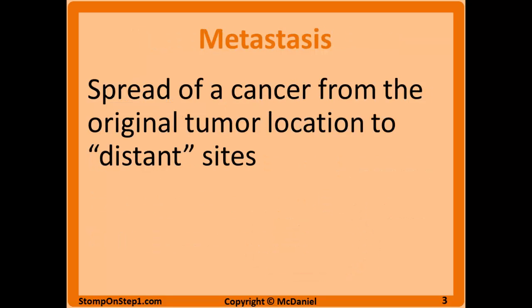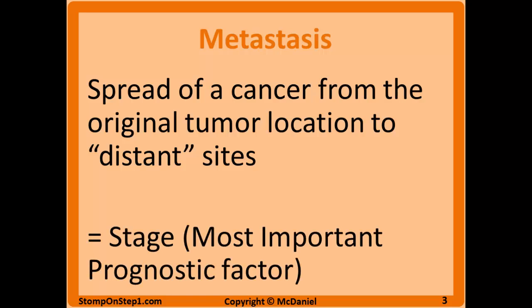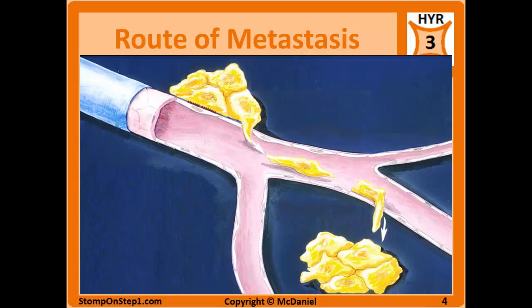Now let's talk about metastasis. This is generally thought of as being separate from cancer invasion, which is the direct extension of a cancer across an organ or to neighboring organs. Invasion is a tumor growing in size and taking up more space, while metastasis involves migration to a completely new site in the body. This is the most important factor for determining a cancer's stage, and the stage is the most important clinically prognostic factor for how your patient is going to do. Cancers take two main highways in the body to spread: either the lymphatics or the bloodstream. Carcinomas tend to spread via the lymphatics, while sarcomas more commonly spread via the blood.